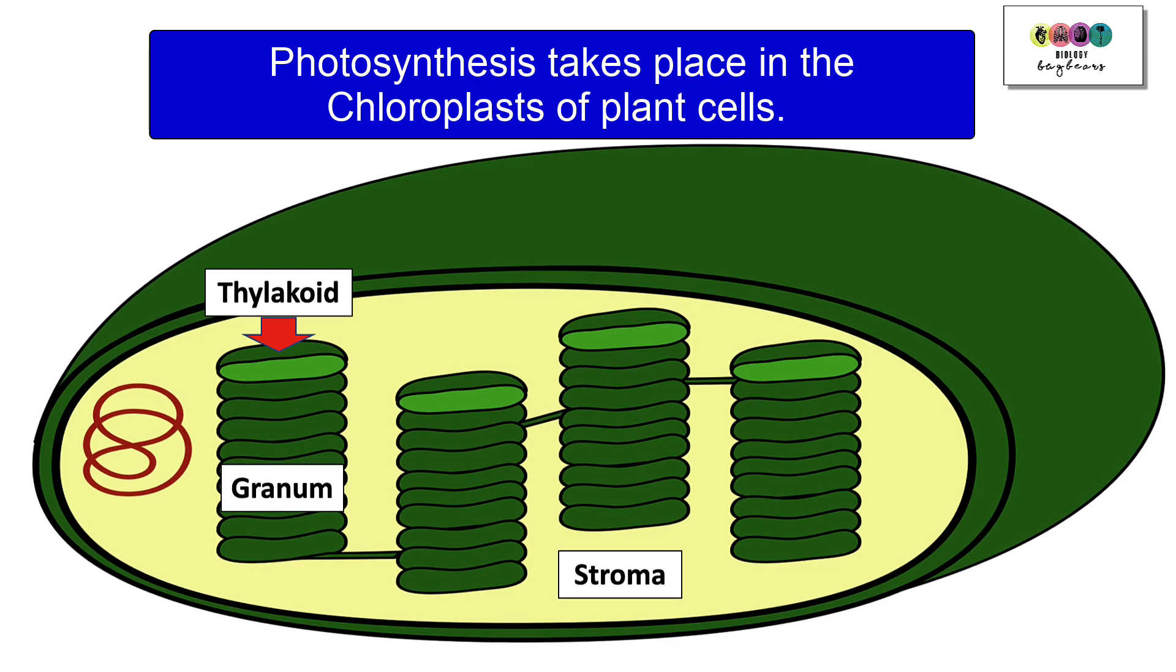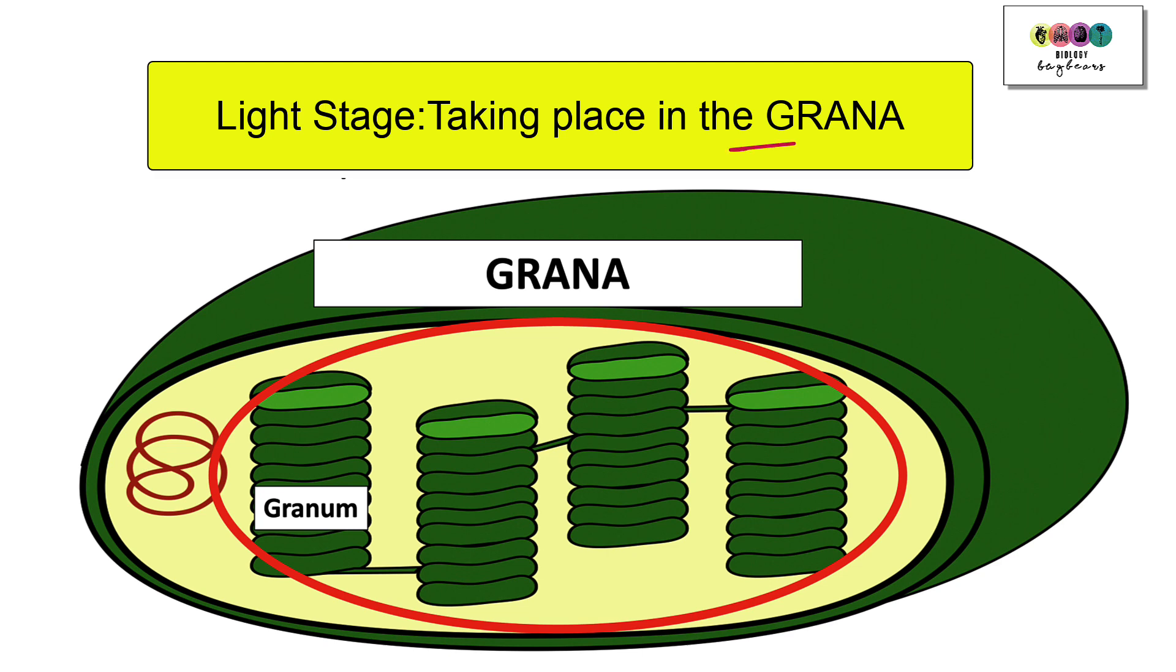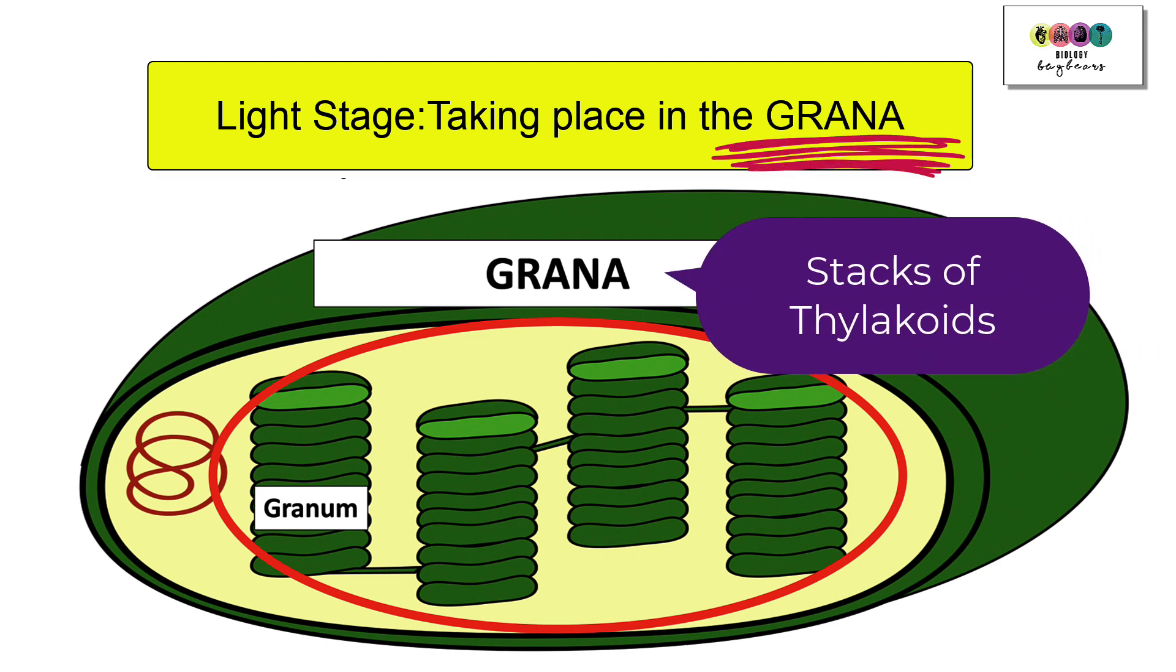Photosynthesis is taking place in the chloroplasts of plant cells and the light stage is taking place in the grana of those chloroplasts, so those stacks of thylakoids.